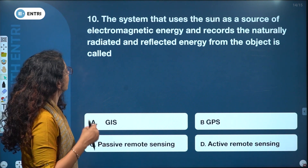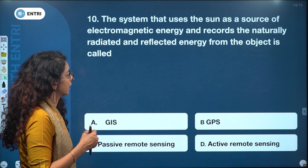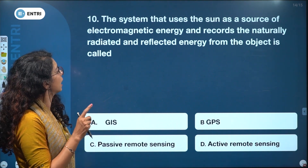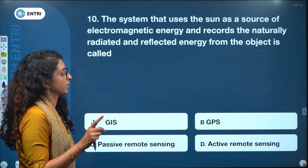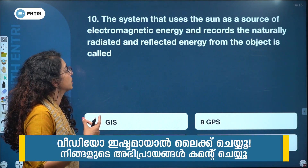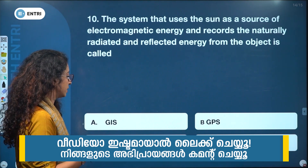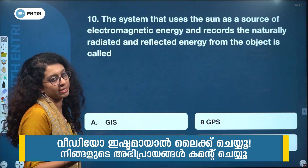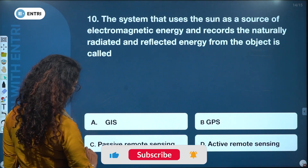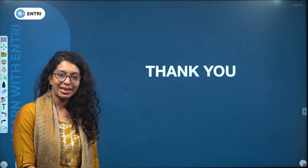The system that uses the sun as a source of electromagnetic energy and records the naturally radiated and reflected energy from objects is called: GIS, GPS, passive remote sensing, or active remote sensing. The answer is passive remote sensing. Thank you.